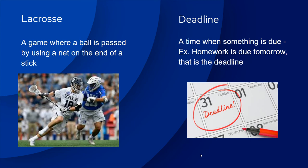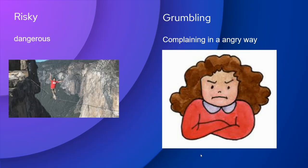Deadline — it's a time when something's due. An example of that is when your homework is due tomorrow — that's a deadline. Risky — that means dangerous. That man crossing the tightrope between the two mountains over the canyon is very risky, something nobody else should be trying. Grumbling means complaining in an angry way — that girl looks like she could be grumbling, saying things that are not so nice because she's upset.